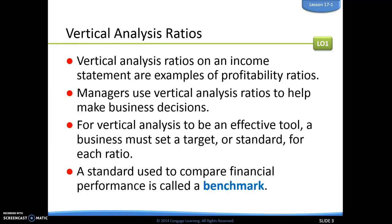Remember, we're going vertically in this section — eventually we'll go horizontally, but for now we're looking at this vertically. Managers use these to help make business decisions moving forward, essentially using them as a tool. We're trying to set either a target or a standard for each ratio, so we're going to have certain ranges we want our ratios to fall into. We call that standard a benchmark. Companies and managers talk about whether they hit the benchmark, the target, or the standard — that's how they set goals and know if they're making progress.